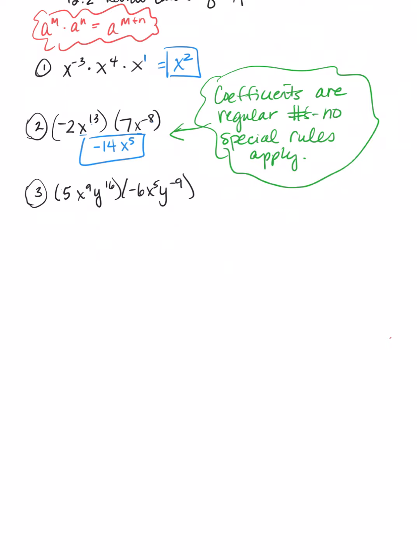All right. Look at number 3. So, let's multiply our coefficients first. So, I would get negative 30. Let's look at the x's first. x to the 9th plus x to the 5th would give me x to the 14th power. And then, the y's match. So, y to the 16th minus 9 is y to the 7th. Okay? So, there's my answer.